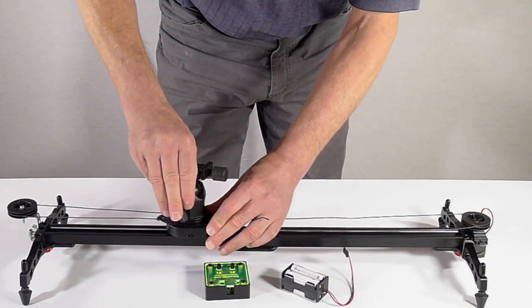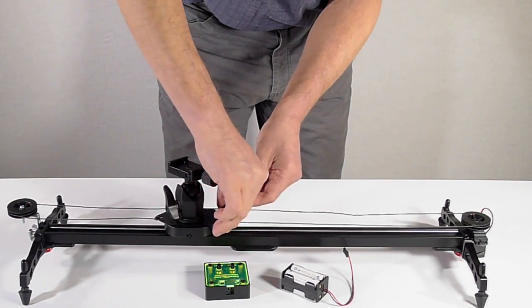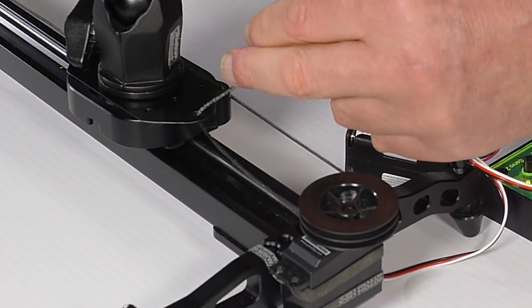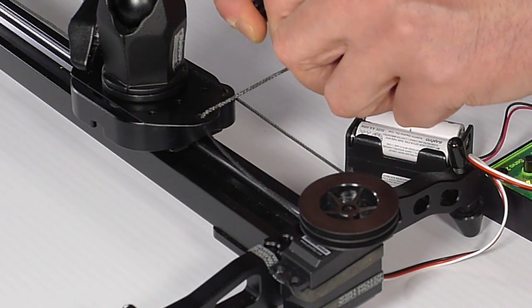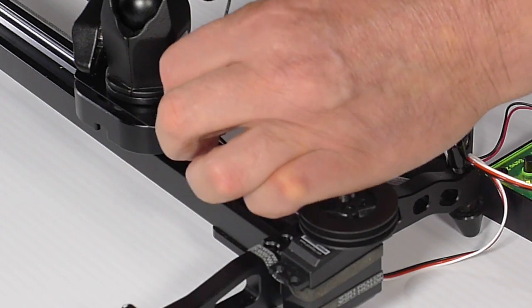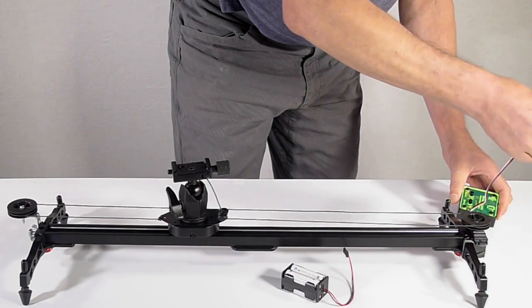Once the tripod head is screwed on tight, the plate is locked in place. The free end of the cord is attached to the plate and tensioned using a simple cord cinch, which is available at any hiking gear or fabric store.